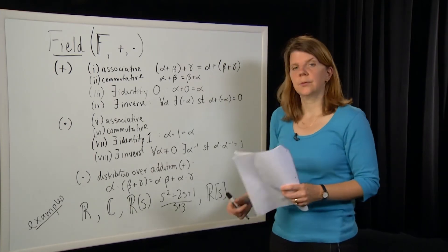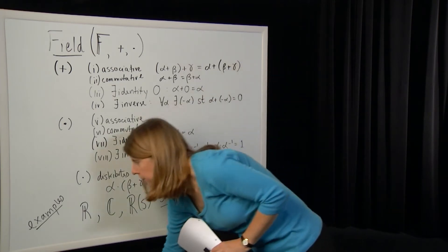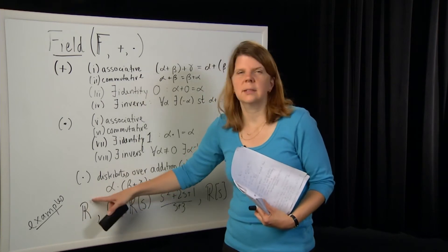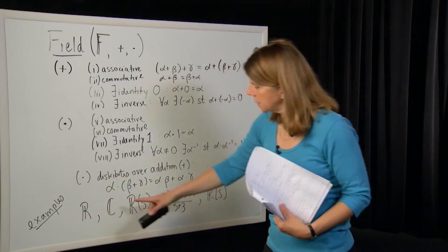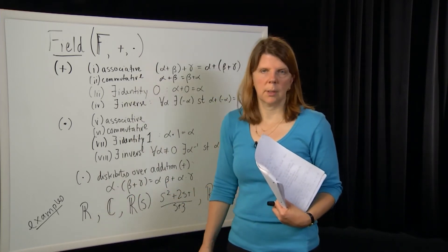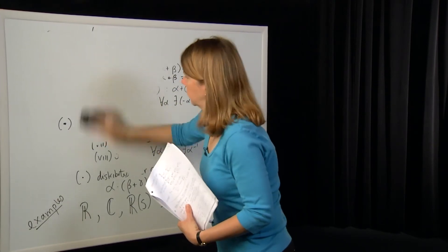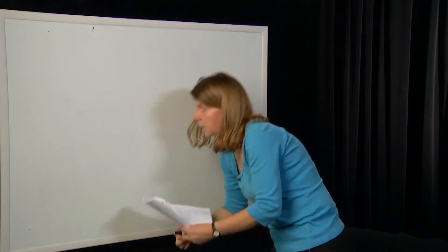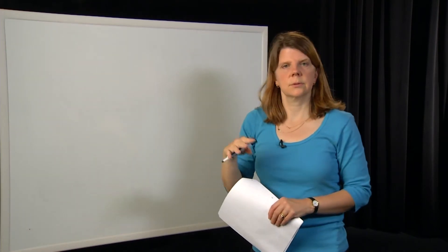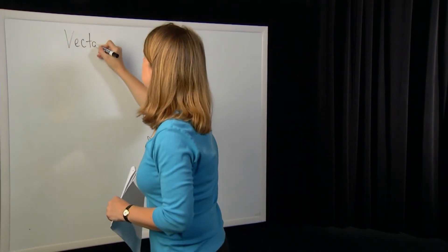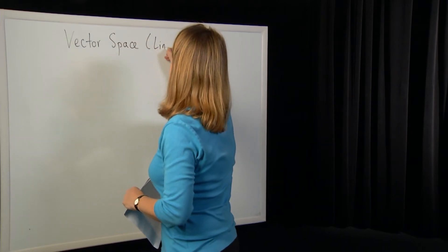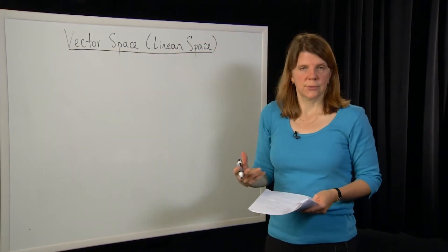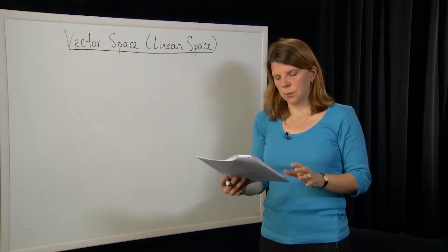So that's the definition of a field, and from that we can define what we mean by a vector space. Typically when looking at vector spaces, we combine a set of elements that are vectors with a field — and in this course we're generally going to use the field of real numbers, though sometimes complex numbers or something a bit more involved. So with that definition of a field, let's move on to a vector space.